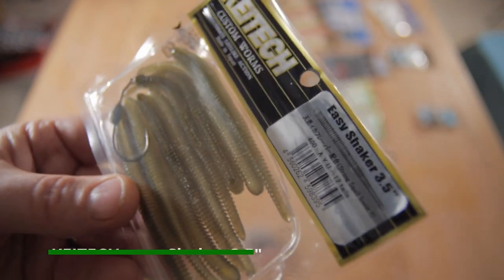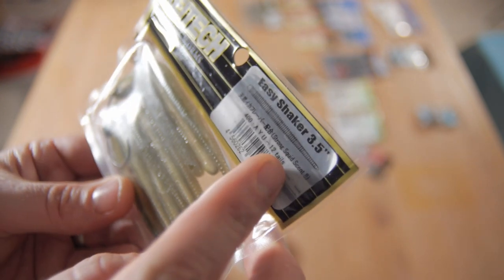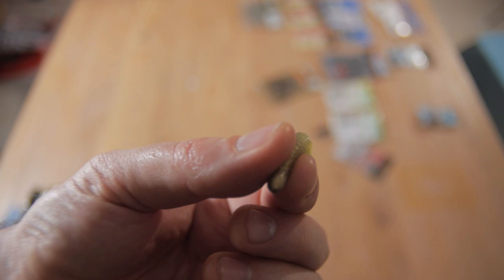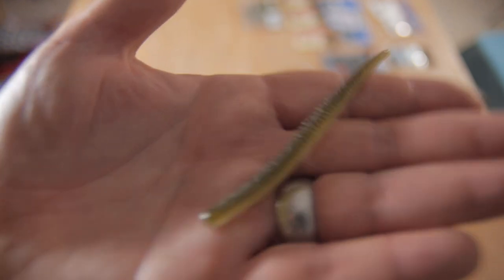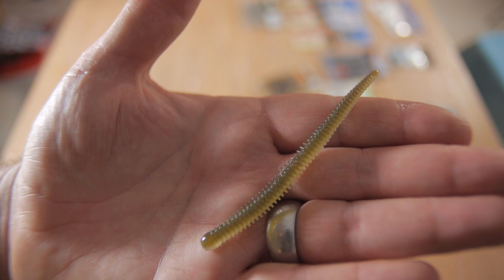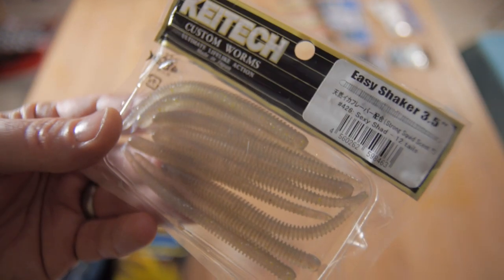Then we've got the Keitech Easy Shaker worms. These are excellent, I can't say enough about these. They absolutely stink, but they've got such a nice action in the water. You fish these weedlessly. I've had a couple of outings with these, fishing them on the Texas rig and Carolina rig. I've had perch and pike on them and they're brilliant, really can't say enough about those baits, apart from they do absolutely and utterly smell. Here's a lighter colored one for those clear days, a bit more finesse presentation. They're both quite natural colors to be honest.